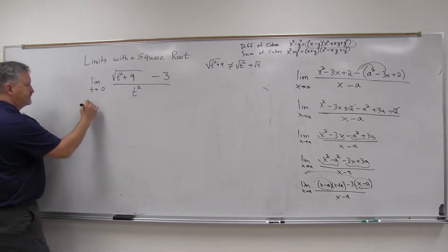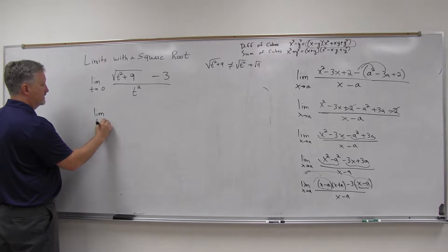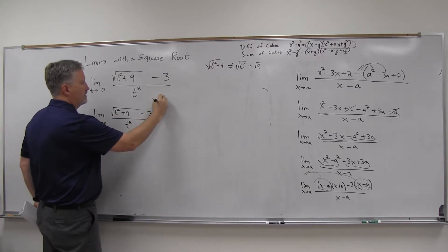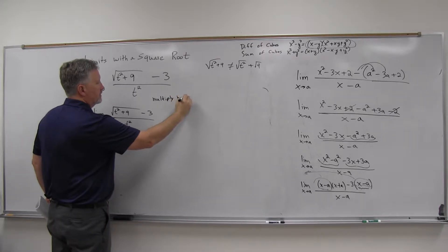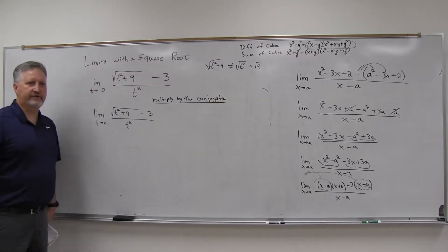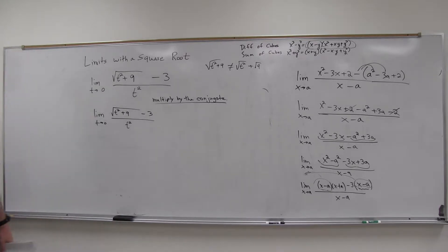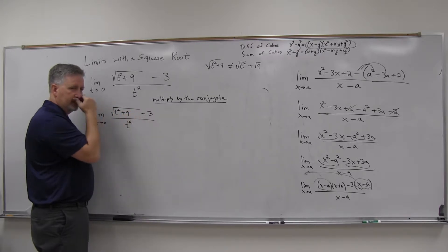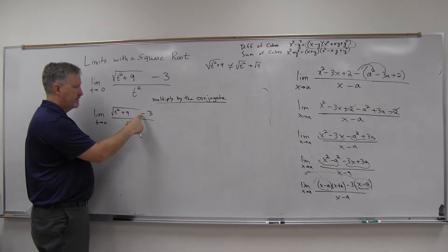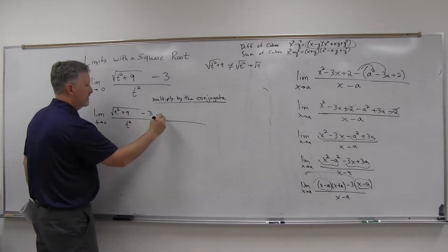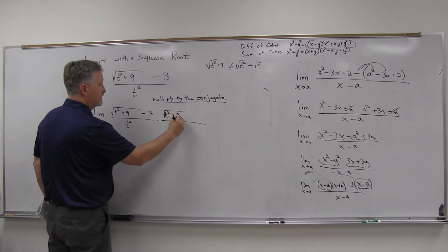So what can we do? Have you ever heard of a conjugate? We're going to use a conjugate here — we're going to multiply by the conjugate. That's going to be our little trick on these square roots where we're stuck. The conjugate is the same expression except you change the sign in the middle. So instead of minus three, I'm going to multiply by the square root of t squared plus nine plus three.